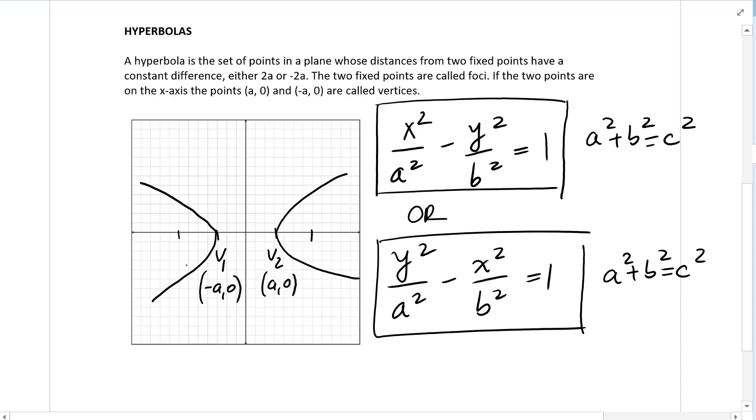The foci—focus 1 is at coordinates (-c,0) and F2 is at (c,0). Then we would have slant asymptotes.